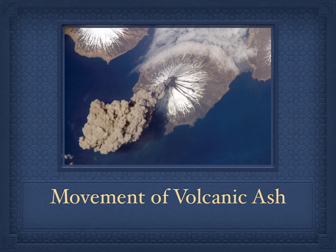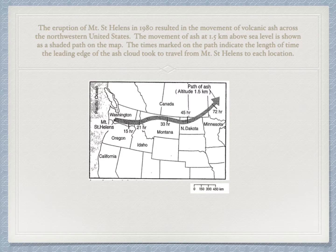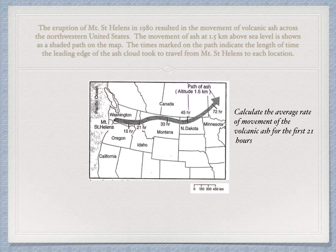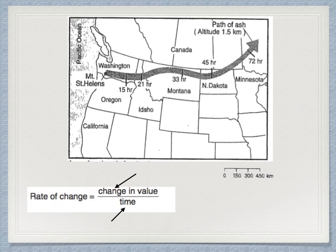Our final problem involves the movement of volcanic ash using a map scale again. The eruption of Mount St. Helens in 1980 resulted in volcanic ash moving across the northwestern United States. The movement of ash at 1.5 kilometers above sea level is shown as a shaded path on a map, with times marking how long the leading edge of the ash cloud took to travel from Mount St. Helens to each location. The problem asks us to calculate the average rate of movement of the volcanic ash for the first 21 hours.